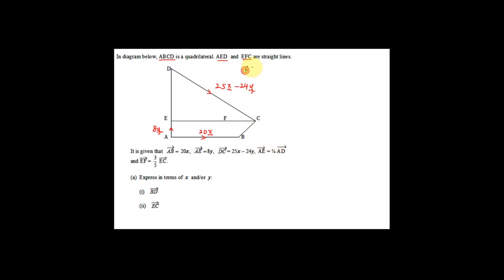Given that AE is 1/4 of AD, therefore AD equals 4AE. Since AE is 8y, AD equals 4 times 8y, which gives us AD equal to 32y. Also given that EF is 3/5 of EC.